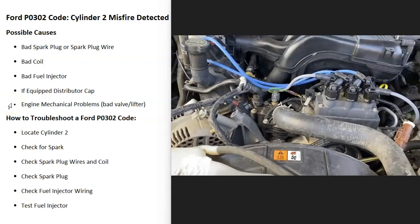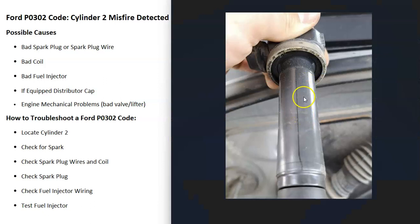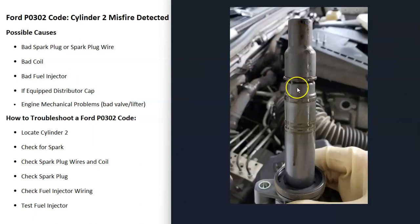How do you go about troubleshooting a Ford with the P0302 code? First, locate cylinder number two. Once you've located it, there are a few different ways to troubleshoot. Check the spark plug wire going to it. If you have an ignition coil that slides in and out, you can pull it out and check it for any cracks, damage, or oil contamination. One of the first things to do is check whether you're getting spark to that cylinder.